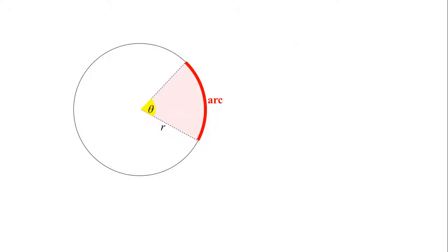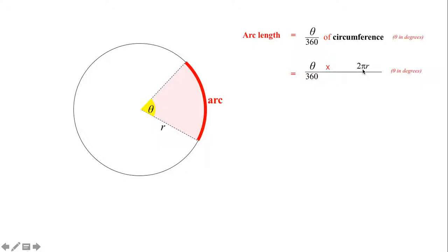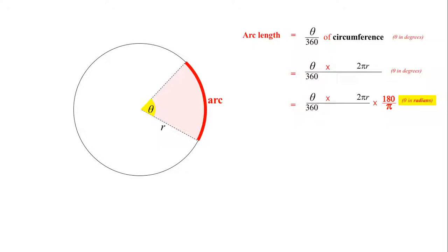Now we're going to talk about the arc length of a circle. If we were to work out the length of an arc in degrees, we'd say it was theta/360 of the circumference. So the whole circumference is 2πr, and because we've only got theta degrees, it's only theta/360 of 2πr. However, if we were given that angle in radians, then we'd need to multiply it by 180/π — about 57 — to get it into degrees.